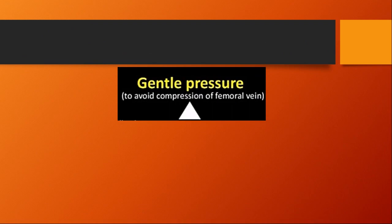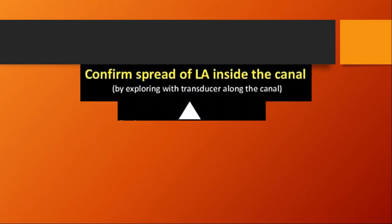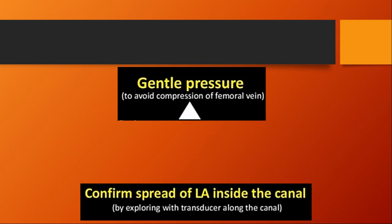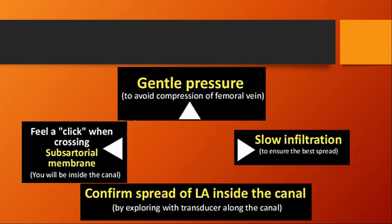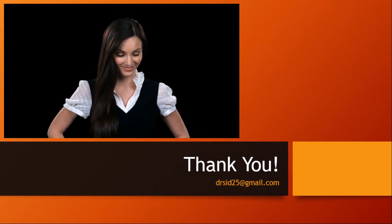Key pearls: apply gentle pressure with the probe since the femoral vein can be compressed by the high-frequency linear probe. Confirm spread of local anesthetic inside the canal by moving the transducer along the canal. A click may be felt when crossing the sub-sartorial membrane. Slow infiltration achieves the best spread with low volume. That's all — thank you.